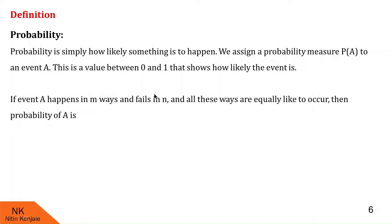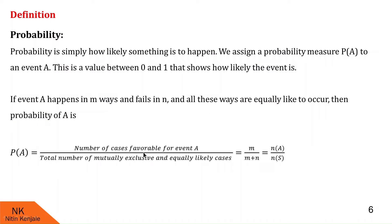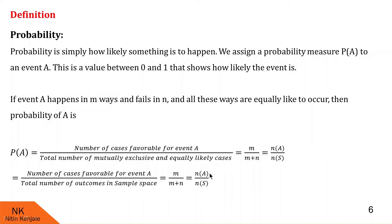If event A happens in M ways and fails in N ways, and all these ways are equally likely to occur, then the probability of A is defined as the number of cases favorable to event A upon the total number of mutually exclusive and equally likely cases. So the total number of cases is M plus N, and P of A equals M upon M plus N. Simply, P of A can be written as N of A upon N of S, where N of A is the number of favorable outcomes to event A, and N of S is the total number of outcomes.